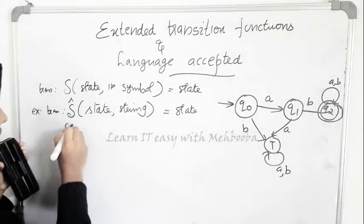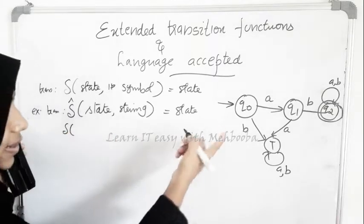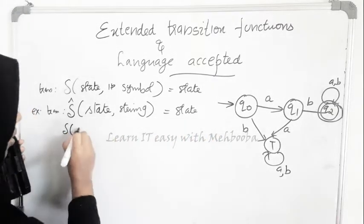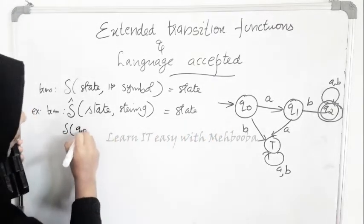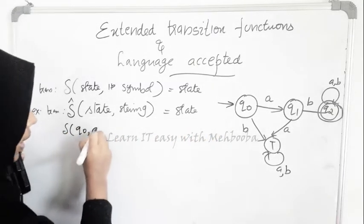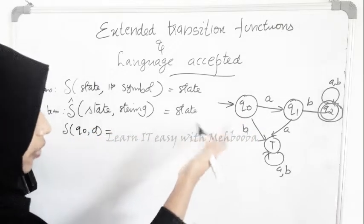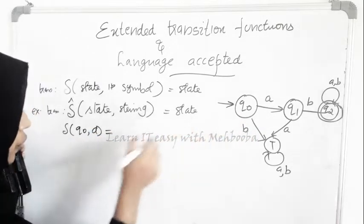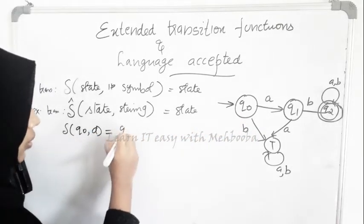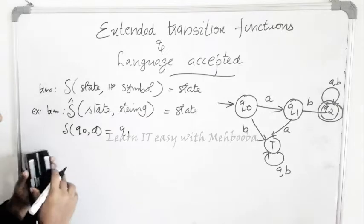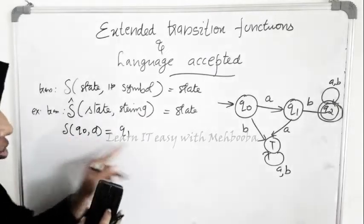The transition function delta — a single transition in this case can be written as delta(q0, a) = q1. When you apply a to q0, you will get q1. That is an example for a transition.